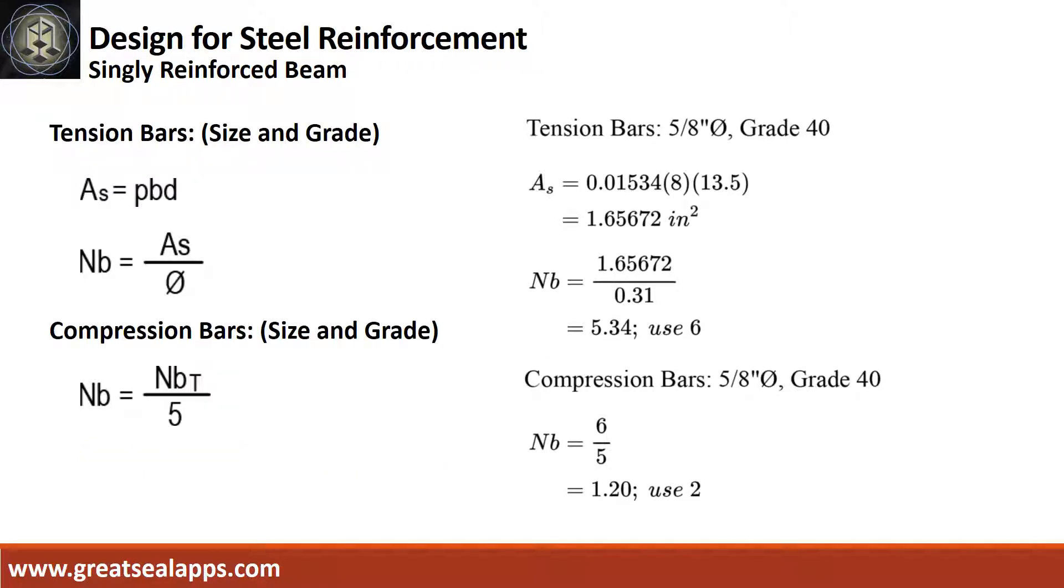Given ρ equals 0.01534, B equals 8, and D equals 13.5, the area of steel for tension bars is 1.65672 square inch, and the number of bars for 5/8 inch diameter is 6. The number of compression bars is 2.